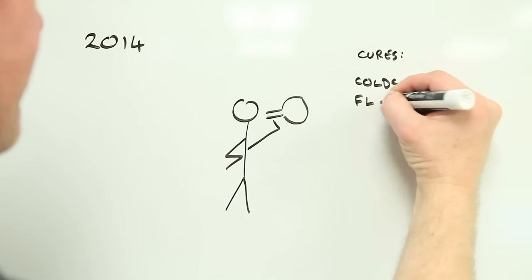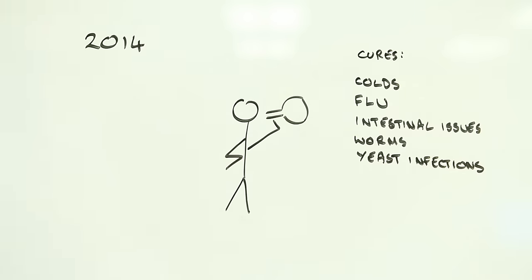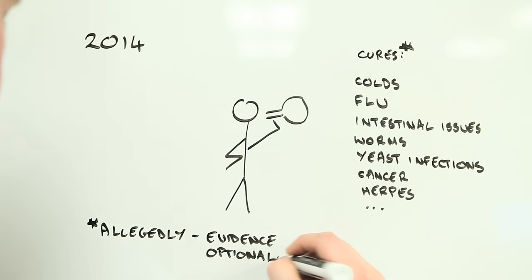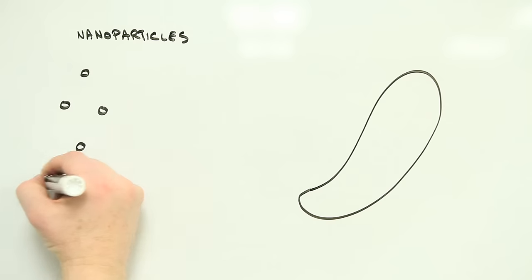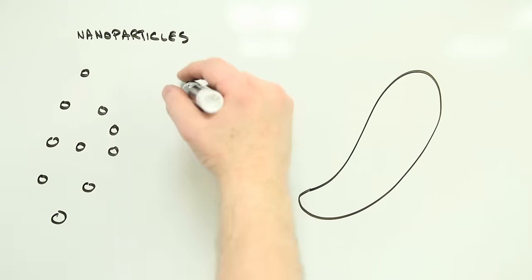There is no clear evidence that drinking colloidal silver is good for you, but the evidence never stopped people from self-medicating before. Three: silver nanoparticles are pretty good at killing microbes, but it's the silver ions that they slowly release that do most of the damage.